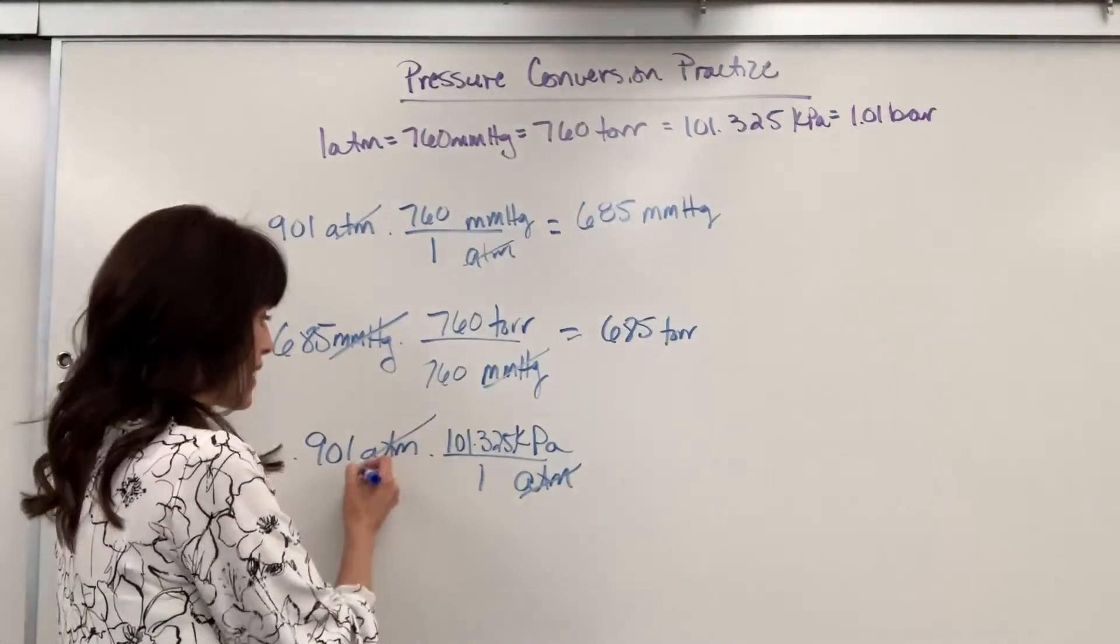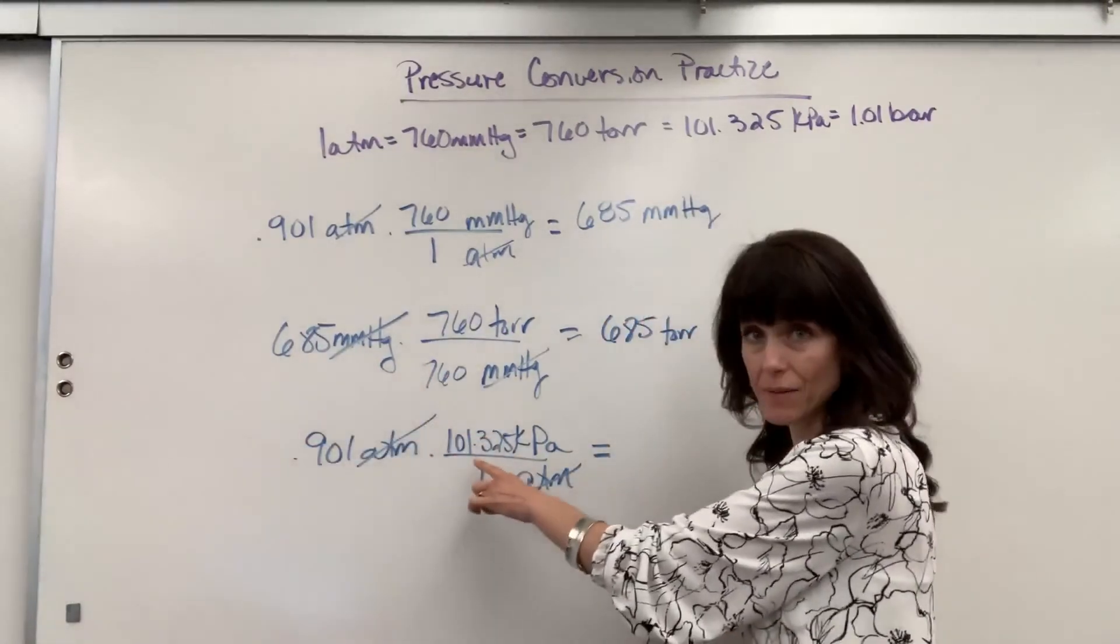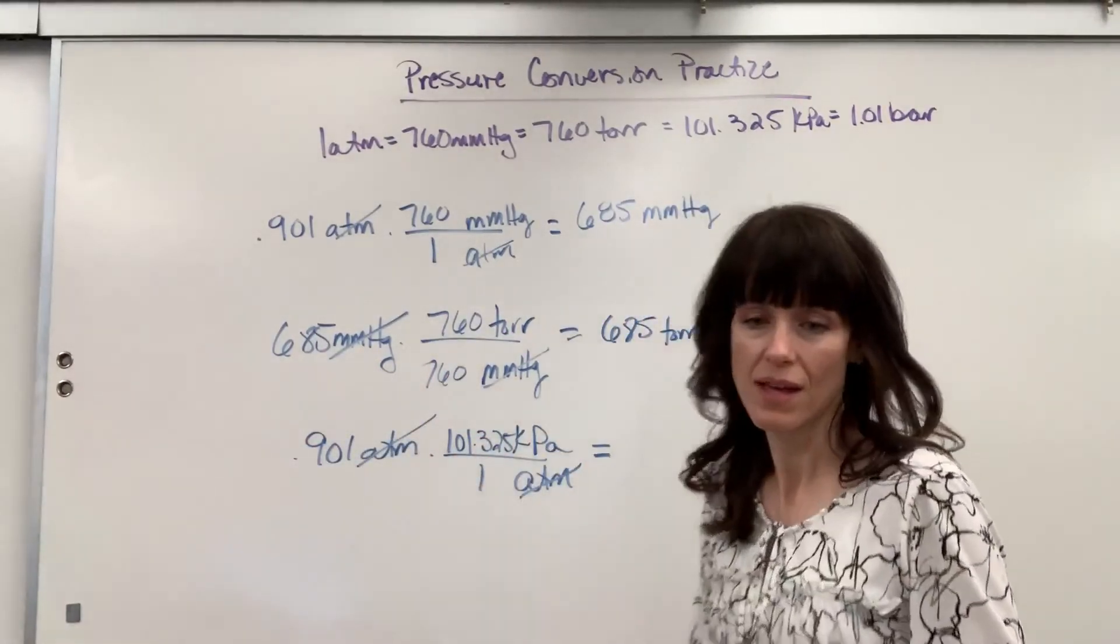ATM cancels, and this tells me to take 0.901 times 101.325.